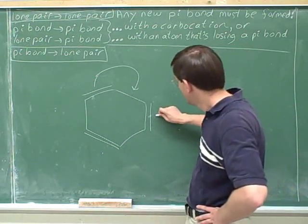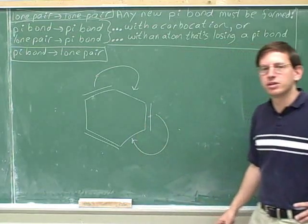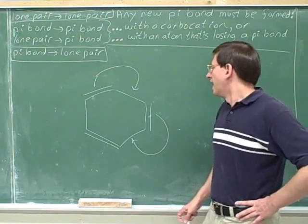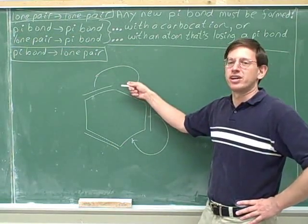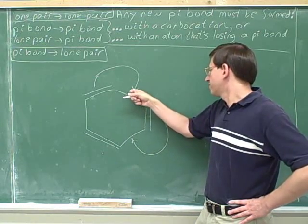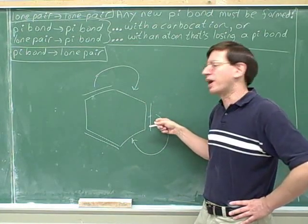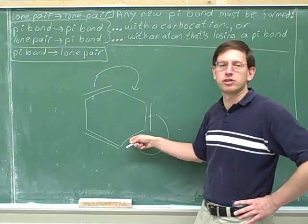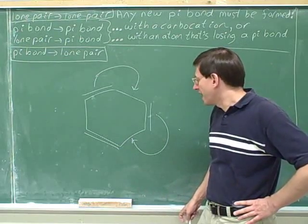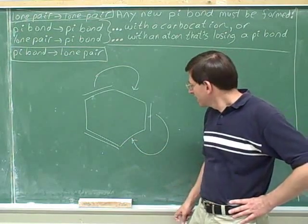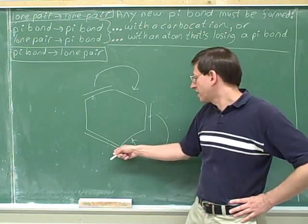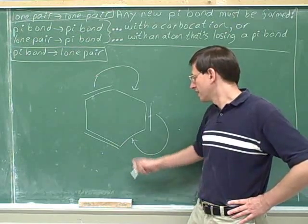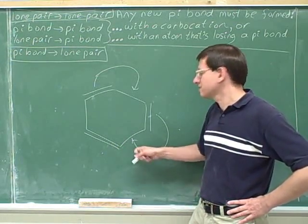How can we make room here? Well, how about moving this pi bond? This fixes the problem with the first arrow — now it's perfectly okay for this carbon to form a new pi bond because it's also losing a pi bond. But what about this new arrow? This new arrow is also forming a pi bond, and that's violating the octet rule, because this is not a carbocation and we haven't moved any pi bonds off of it yet. So this arrow is now illegal. We'd need to move this pi bond away as well.